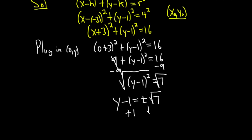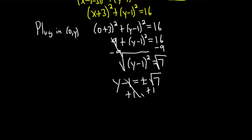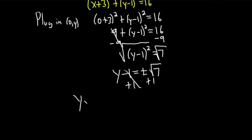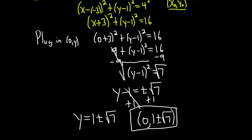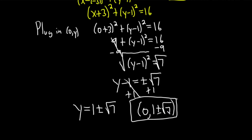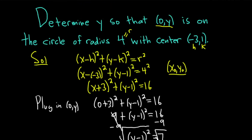Adding 1 to both sides, we get y = 1 ± √7. So points of the form (0, 1 ± √7) will lie on this circle. Pretty cool, right? So there's only two points with x = 0 that lie on the circle.